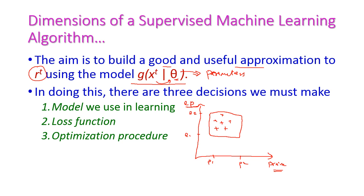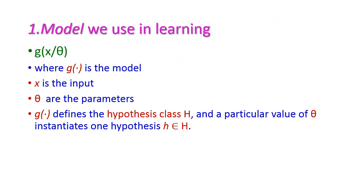If the sample falls within this particular range, we consider it a family car. The theta value represents the engine power and price values defining that range. If r equals 1, x belongs to this family car range; if x is outside this range it is a negative sample and r equals 0. For this there are three decisions we must take: the model, the loss function, and the optimization procedure.